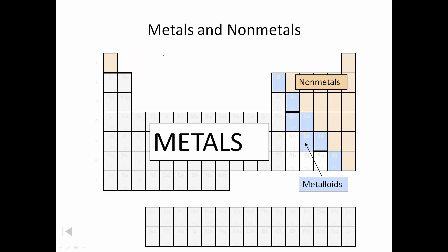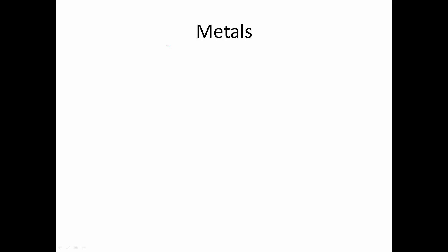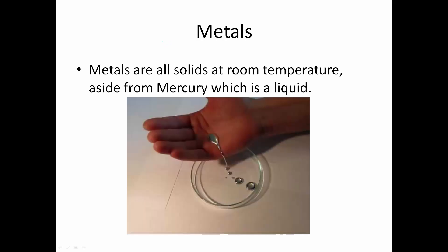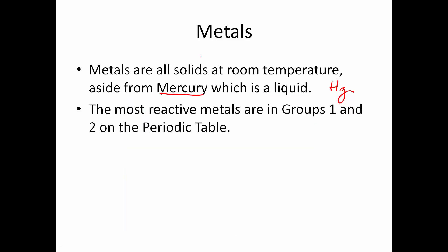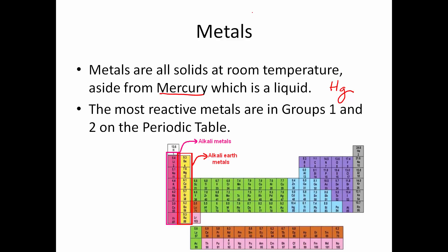Over here in the blue, we have the metalloids. Let's talk about metals first. Every single one of them are solids at room temperature, aside from mercury, which is a liquid at room temperature. The most reactive metals are in groups one and two on the periodic table — the single most reactive metals in terms of groups.